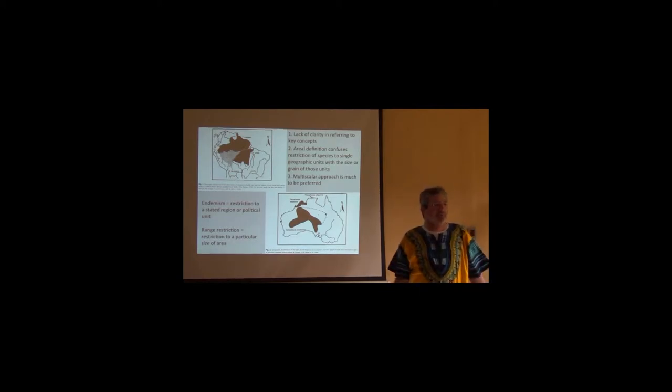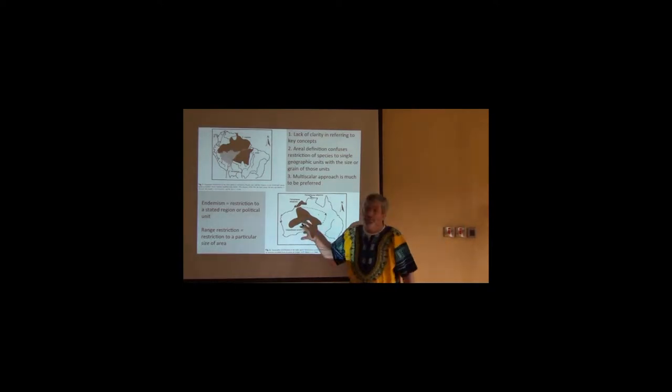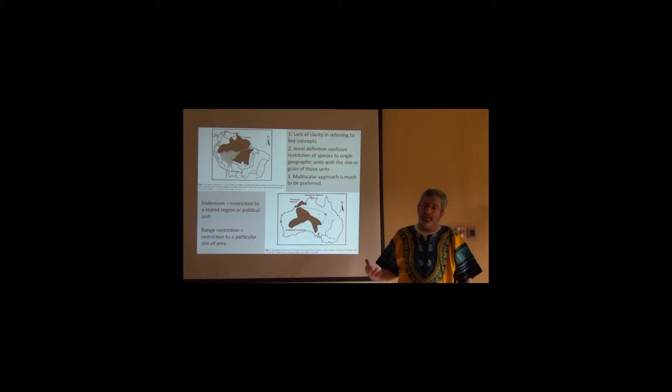Essentially, we certainly need a multi-scalar approach. Why 50,000 square kilometers? Why not 40,000 or 100,000? Is it just convenient because 50,000 gives you about 2,500 species? Is it just convenience? We're losing a lot of biology.